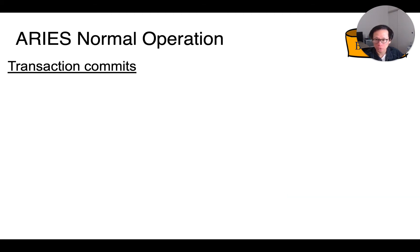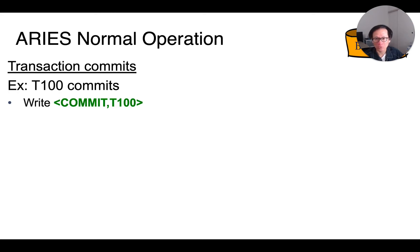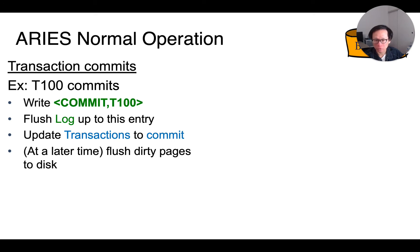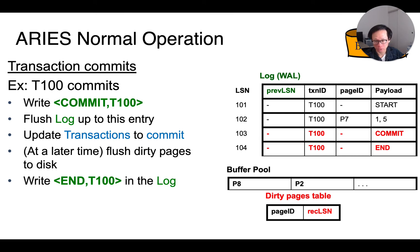Let's say transaction 100 decides to commit. We first write the commit record to the log, and then we flush the log entry to the disk. We then update the transaction status to commit. And then later on, after we have flushed the dirty data pages to the disk, we write the end record in the log.